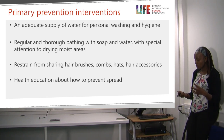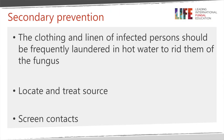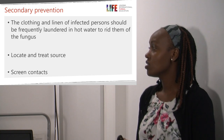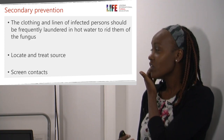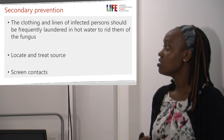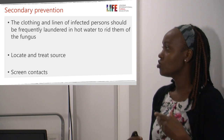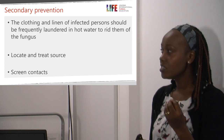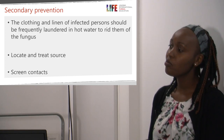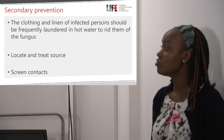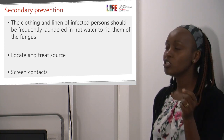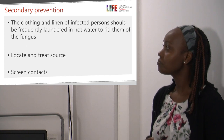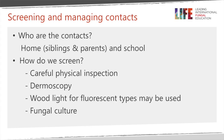Secondary prevention — preventing the spread of infection to others — involves frequently laundering the clothing and bedding of the infected person in hot water. You should also locate and treat the source, whether an animal or an asymptomatic individual, and screen all contacts.